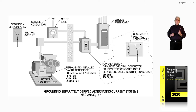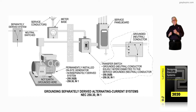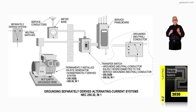In the 2017 edition, along with the revision of the 2020, informational note 1 to 250.30 plainly says it all deals with the grounded conductor from the generator and the transfer switch.